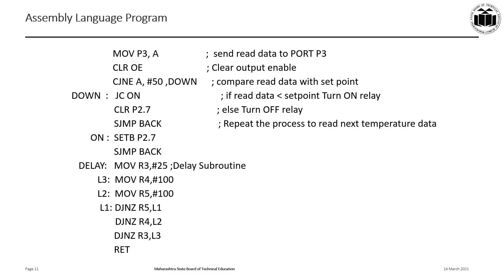CLR OE clears the output enable signal of the ADC. The converted data — corresponding to the read temperature — is now available in register A. CJNE A, #50 compares the read temperature with the set point of 50. If they are not equal, the program control goes down. If A is less than 50, the carry flag will be set; if A is greater than or equal to 50, the carry flag will be reset. JC ON means: if carry is set, jump to label ON.